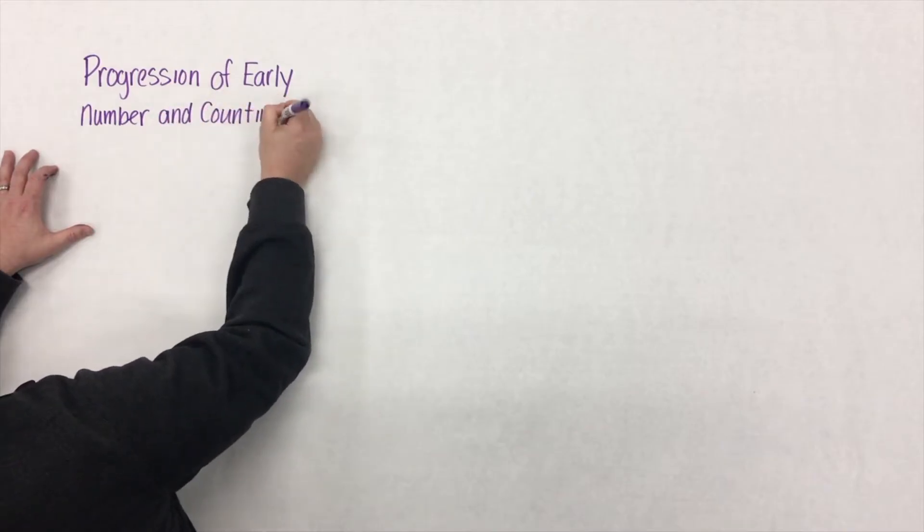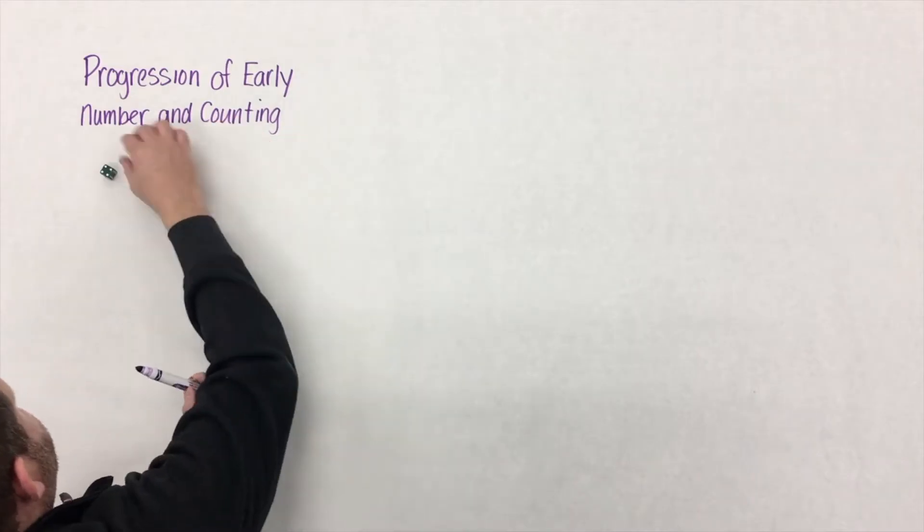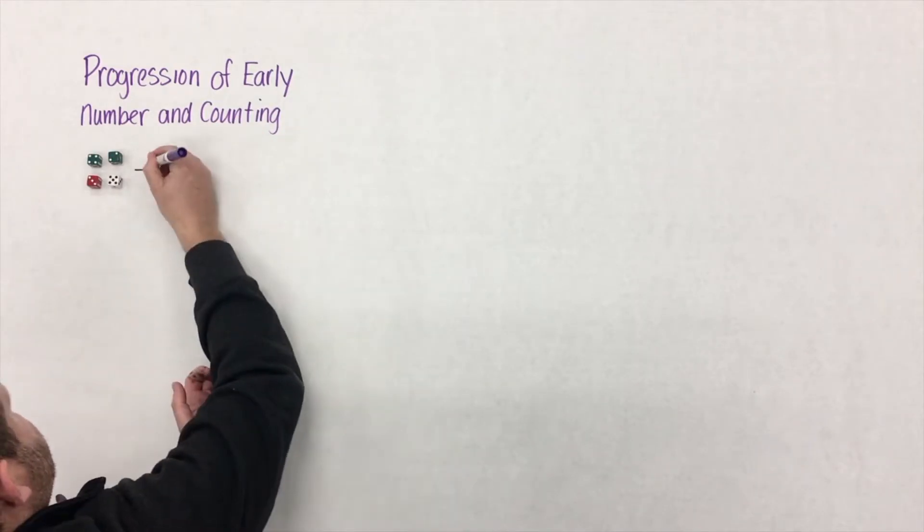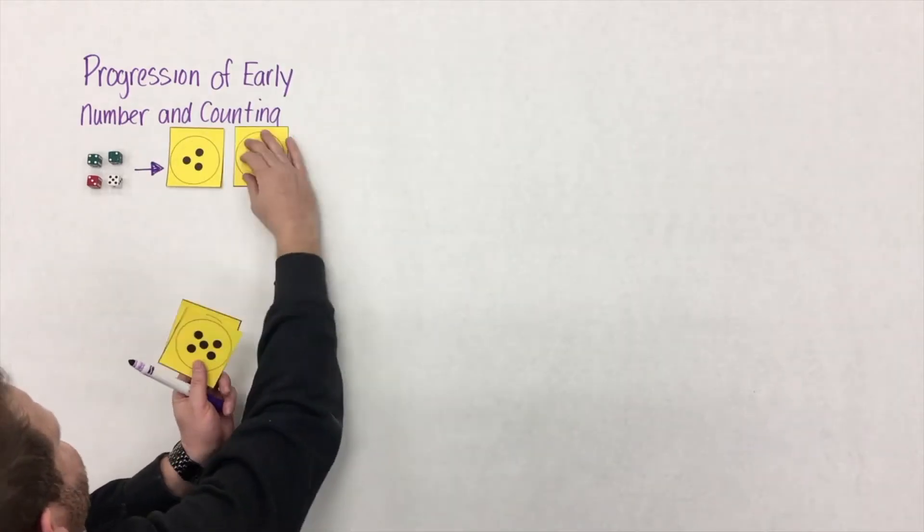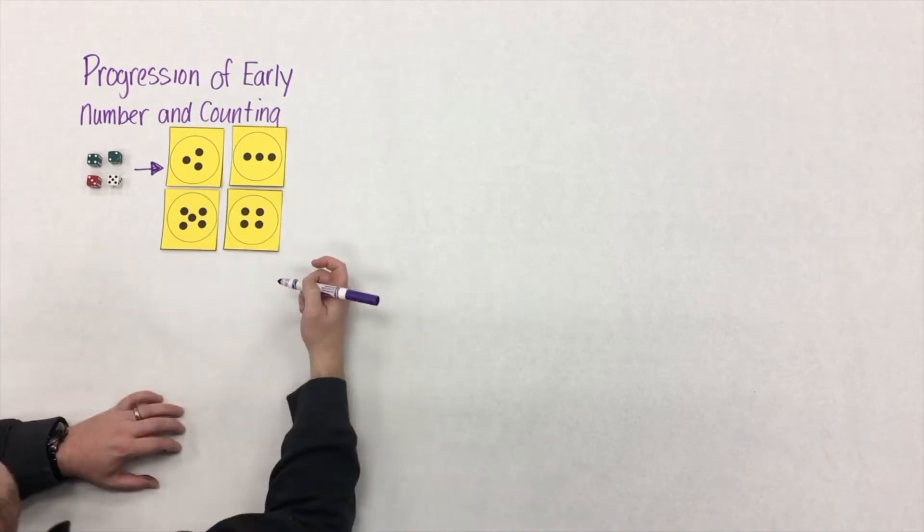Before students come to us in kindergarten, they begin to see what numbers look like. I mean, literally. Check out these dice. Students know that there's 4, 2, 3, and 5, but they don't know that quantity. They're just simply calling out number names and matching them to what the things look like.